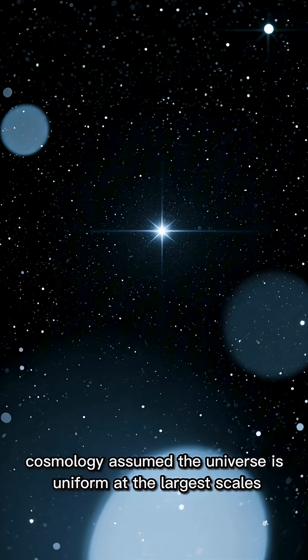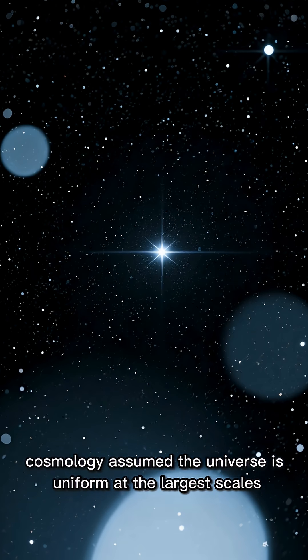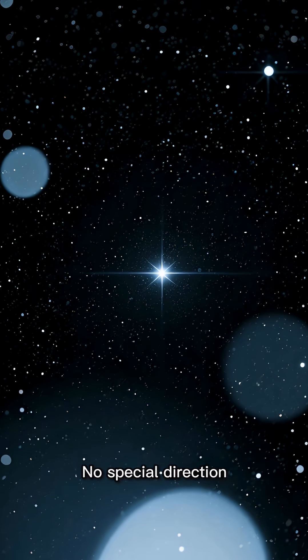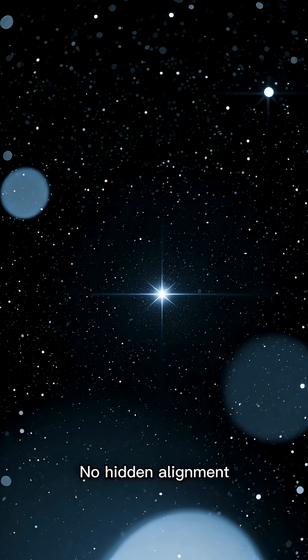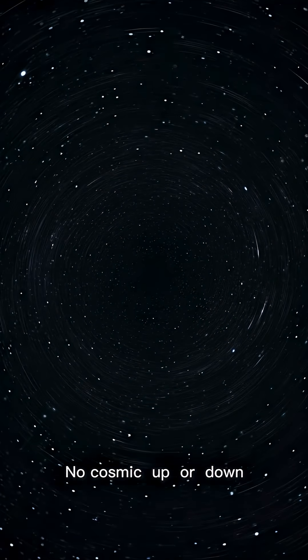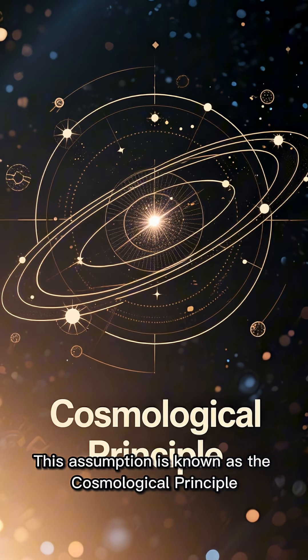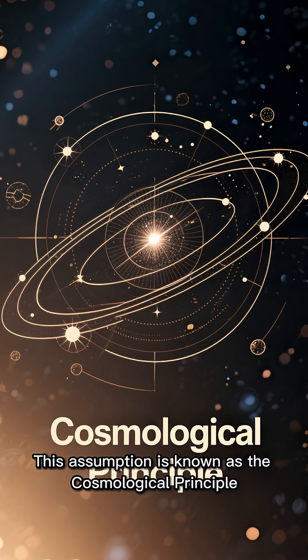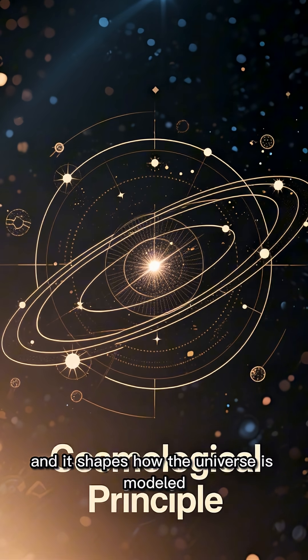For a long time, cosmology assumed the universe is uniform at the largest scales. No special direction, no hidden alignment, no cosmic up or down. This assumption is known as the cosmological principle, and it shapes how the universe is modeled.